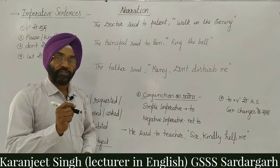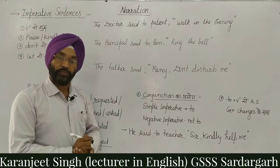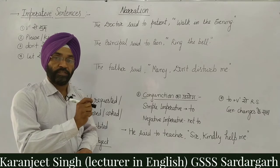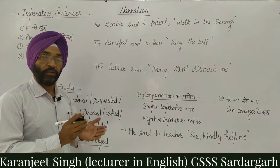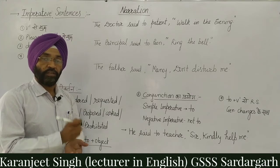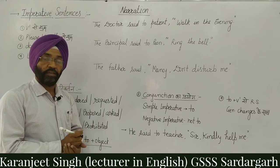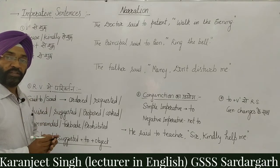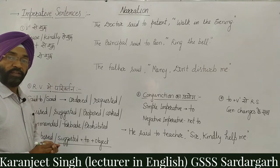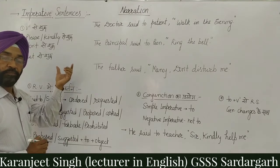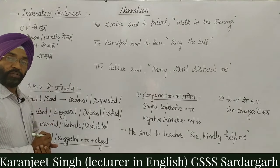First of all, the meaning of imperative sentence. Imperative sentence ko hama agya suchak waq ke naam se jantay hain — jin sentences se hama order, suggestion, proposal, prohibition conveyed hoti hai, unhye imperative sentence kehte hain. Iski sabse pahli pahachan ye hai ki ye first form of the verb se shuru hoti hai. Generally English sentences subject se shuru hoti hai, lekin imperative sentence first form of the verb se shuru hoti hai — iska subject 'you' hidden rehta hai. For example: 'Bring a glass of water.'